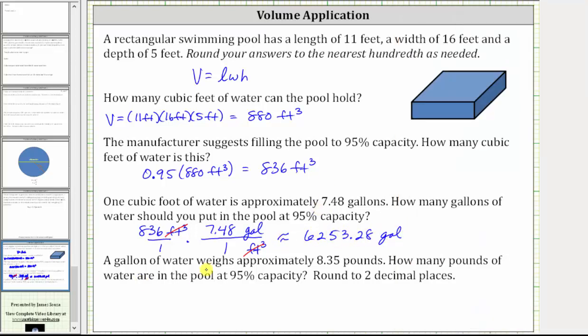And for the last question, a gallon of water weighs approximately 8.35 pounds. How many pounds of water are in the pool at 95% capacity? So we know at 95% capacity, we have this number of gallons of water. We need to convert this into pounds using the conversion provided.